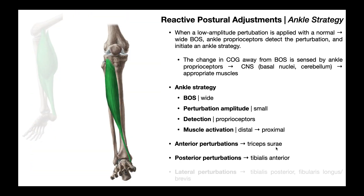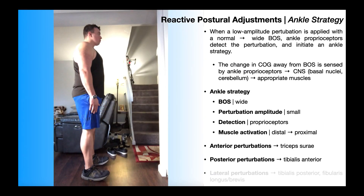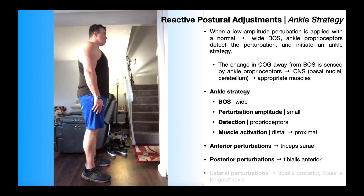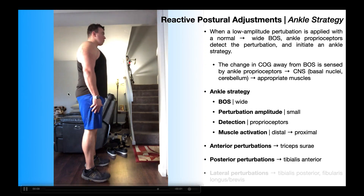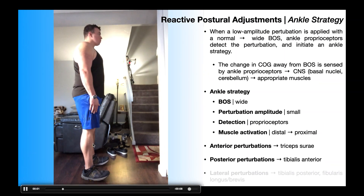Logically, if the triceps surae muscle group is used for ankle strategies from anteriorly directed perturbations, it would make sense that the tibialis anterior would be used for ankle strategies from posteriorly directed perturbations — and that is true. In this example of the ankle strategy from a posteriorly directed perturbation, the same rules apply: the first muscle to activate is the most distal one, the tibialis anterior.